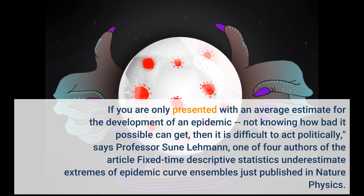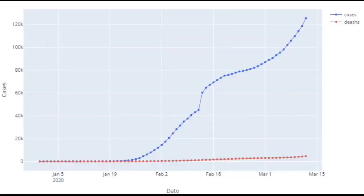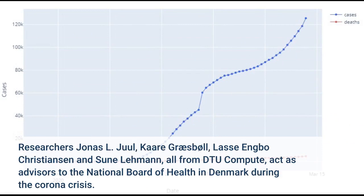Professor Lehman is one of four authors of the article "Fixed Time Descriptive Statistics Underestimate Extremes of Epidemics." Researchers Jonas L. Jewell, Kare Graysbel, Lasse Engbo Christensen, and Sunay Lehman, all from DTU Compute, act as advisors to the National Board of Health in Denmark during the corona crisis.